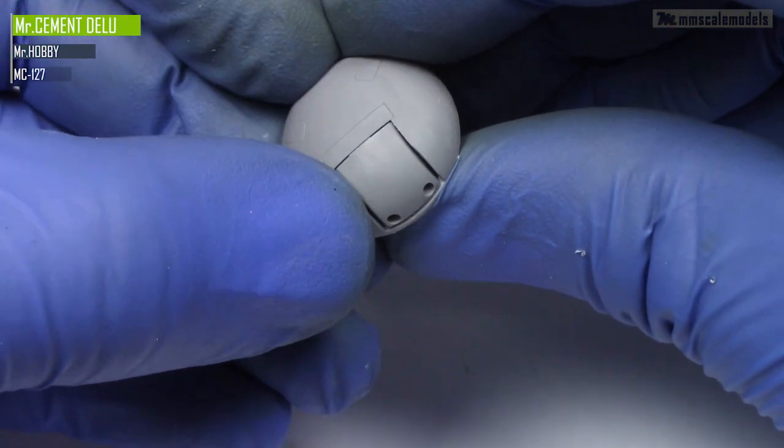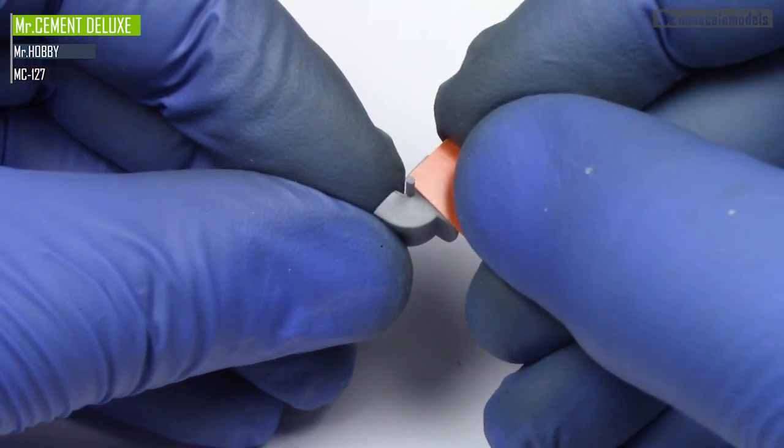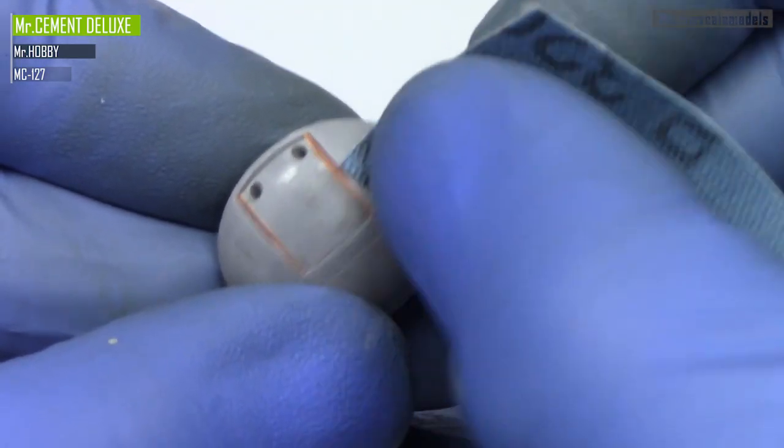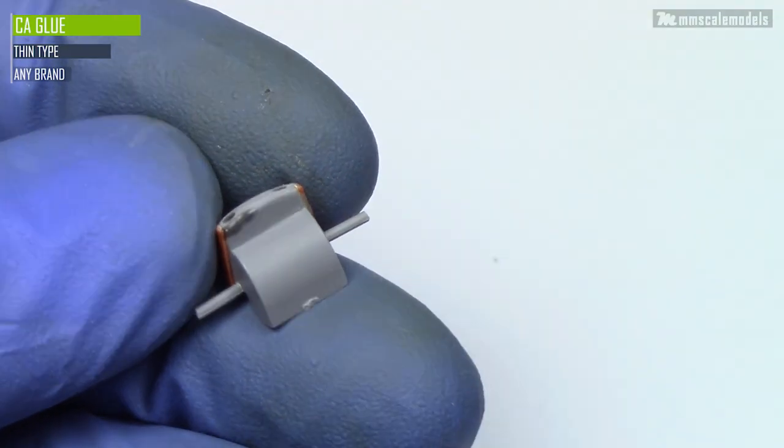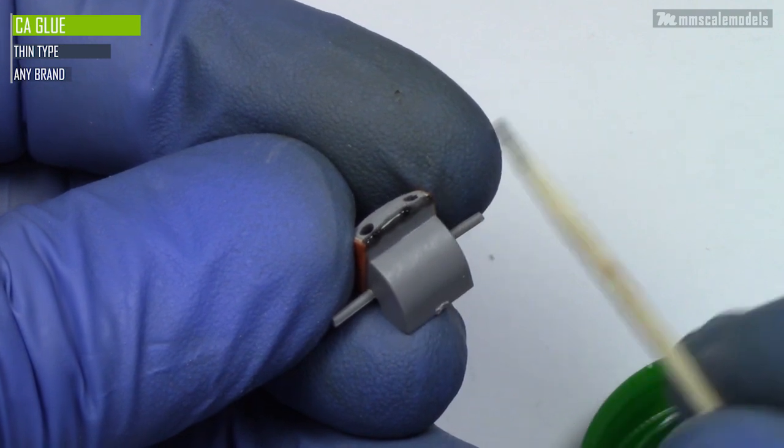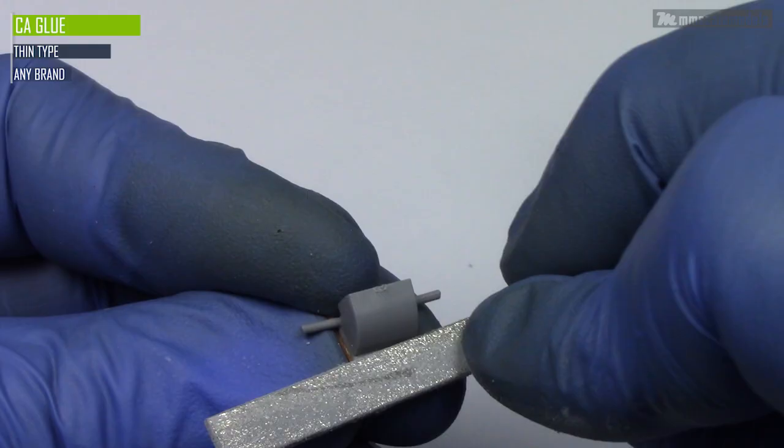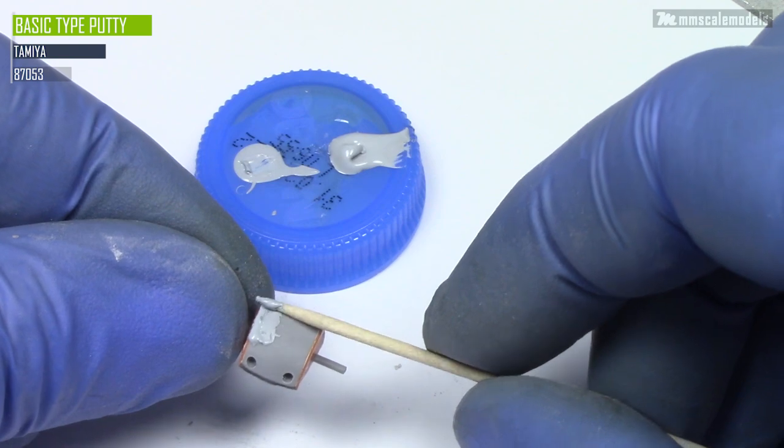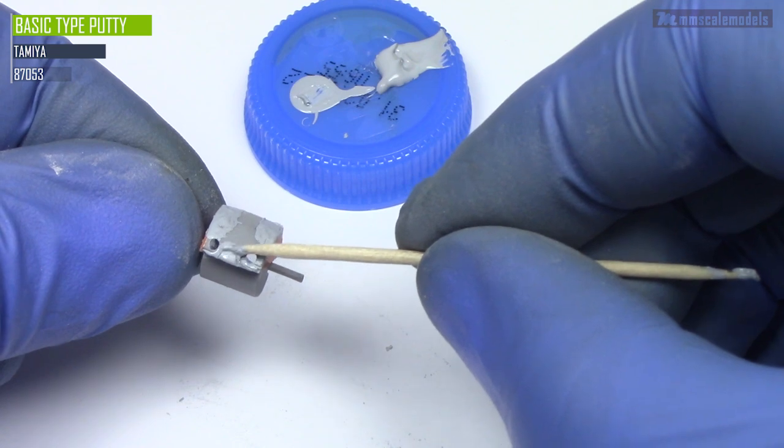The turrets will need some work too. The gaps between the fairing and the gun mount is quite significant. To fix that I glued a piece of sheet plastic on each side of the gun mount and then trimmed and sanded the excess with the mount fitted inside the turret. Next up I addressed the gap in the chin area using CA glue which I carefully shaped using a flat file. After I was happy with the overall shape and the gaps I applied Tamiya basic type putty to achieve a smooth finish.